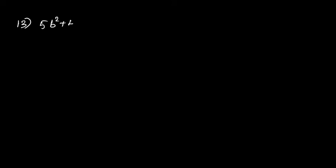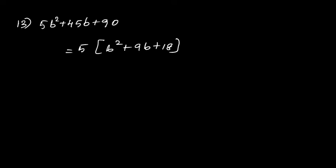13th question: factorize completely 5b²+45b+90. Take the number 5 as common, so we will have b²+9b+18. Now factorize b²+9b+18.